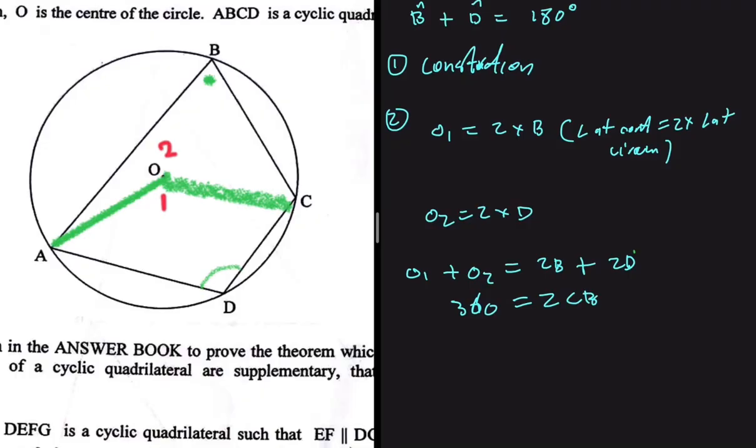Now it's easy to see that if we divide both sides by 2, we're going to get 180 degrees equals B plus D. And there we go, we have proved that the opposite angles of a cyclic quad are indeed supplementary.